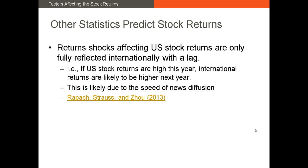The final statistic is the return on the U.S. market. In 2013, Rappach, Strauss, and Zhou published a paper demonstrating that U.S. stock returns lead the returns in other markets. The reason is likely the speed of information diffusion, or because if U.S. firms experience good market conditions, consumer and investor sentiment could rise, increasing demand for goods, and then foreign firms supplying many of those goods are likely to benefit, thus increasing returns on the equity of those firms.